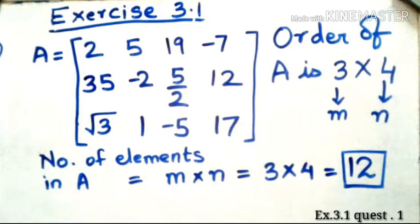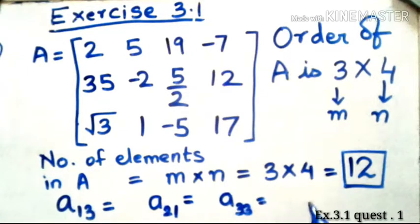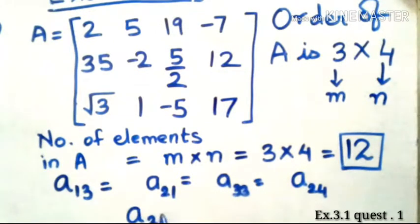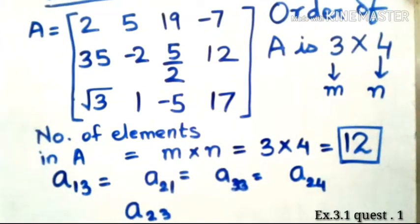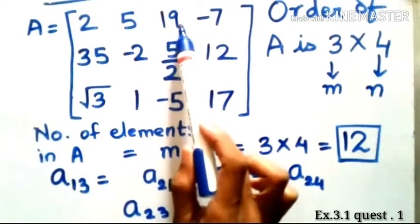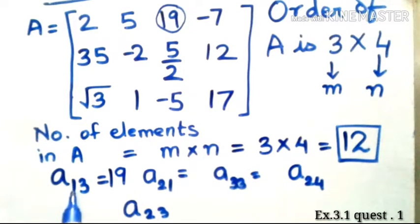There are 12 elements in matrix A. The third part asks for the values of certain matrix elements: a₁₃, a₂₁, a₃₃, a₂₄, and a₂₃. For a₁₃, that is the first row and the third column, so the element is 19.